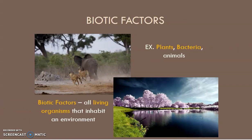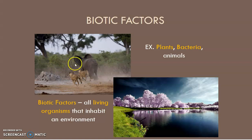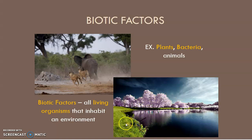Looking at this picture, we see an elephant with some lions, rocks, and trees. The things considered living in this picture — the biotic factors — would be the elephant, the lions, the trees, the plants, and even bacteria you can't see. In the next picture we have clouds, sky, trees, grass, and water. The biotic factors there would be the trees, the grass, and bacteria and ants we can't see.